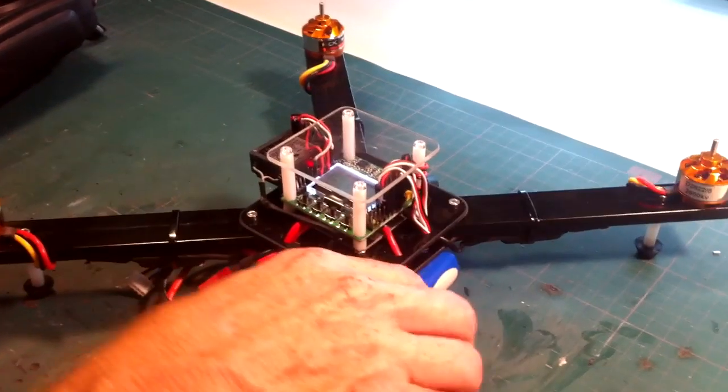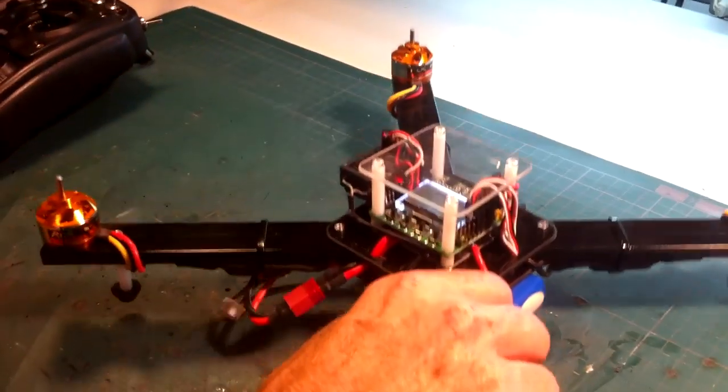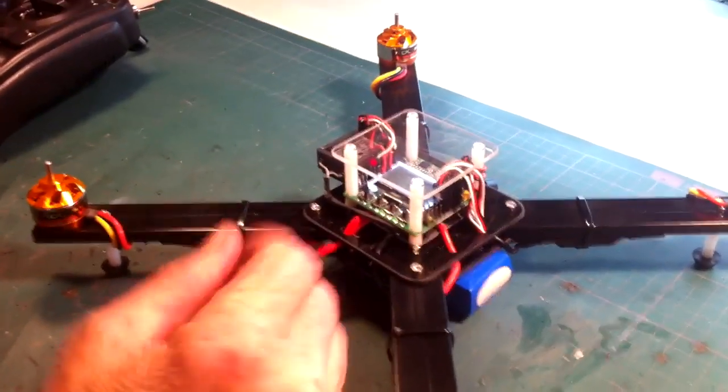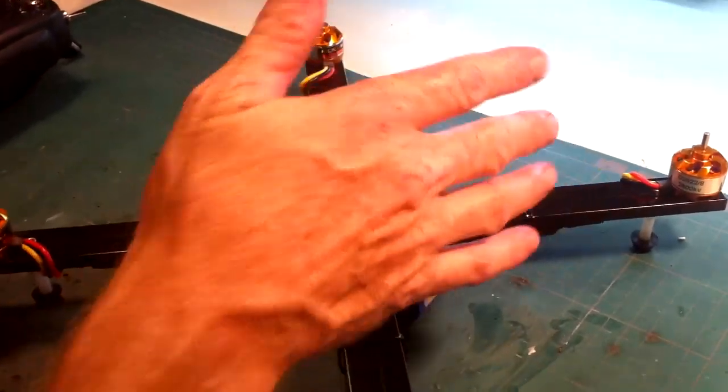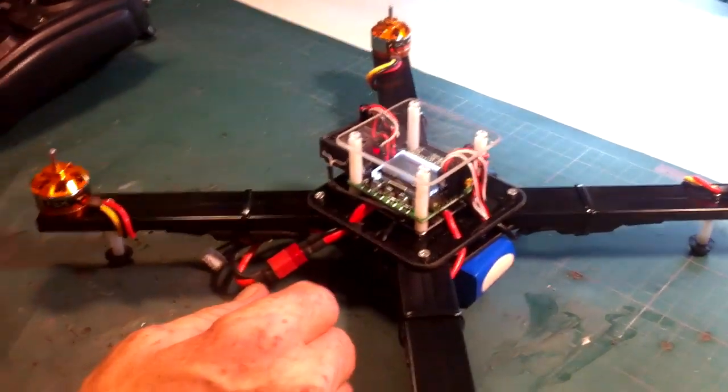And if you go to land and it bounces back up when you land, again reduce the P gain. Now if you try this and there's no issues, it lands fine, there's no oscillation, then you can try raising it five or ten points at a time, raise the P gain.